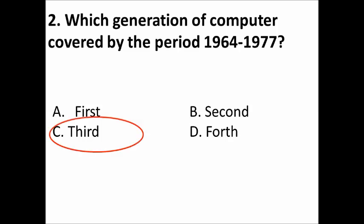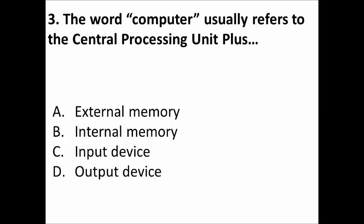Next question: The word computer usually refers to the central processing unit plus A: external memory, B: internal memories, C: input device, D: output device. And the correct answer is B.